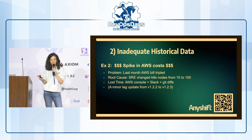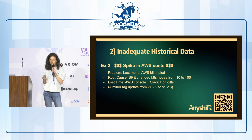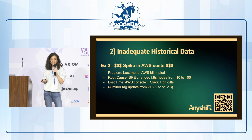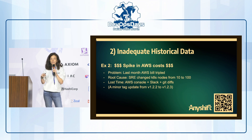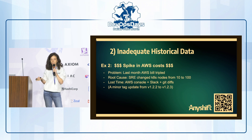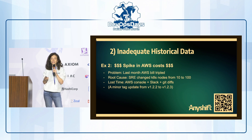I'm still going to speak about AWS costs, and the story is about a bill which just tripled in a month. The root cause was that a junior SRE had changed their Kubernetes cluster from 10 to 100 nodes. A month later, they realized it had been applied to their entire configuration because it was a minor tag update, not a major one. The senior SRE had to go through Git diffs, ask on Slack, and search on the AWS console to figure it out.